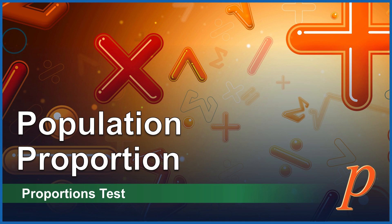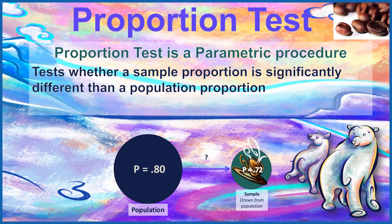The third and final hypothesis test that we're going to learn about this week is how we would do our hypothesis testing with proportions. This is called a proportion test, and we should begin by asking what is a proportion test? It is a parametric procedure. That means we're going to be using population values, and we will be testing whether a sample proportion is statistically significantly different than a population proportion.